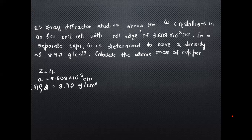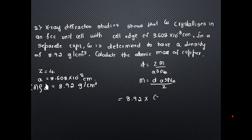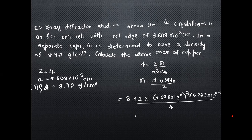We need to calculate the atomic mass of copper. The data: FCC so Z = 4; cell edge a = 3.608 × 10⁻⁸ cm; density ρ = 8.92 g/cm³. Using D = ZM / (a³ × Nₐ), rearranging gives M = D × a³ × Nₐ / Z.